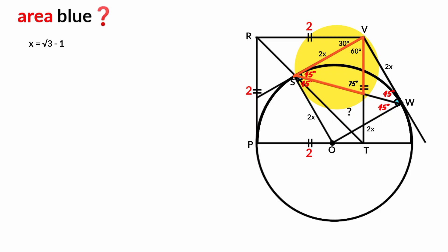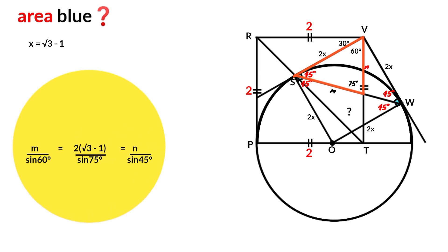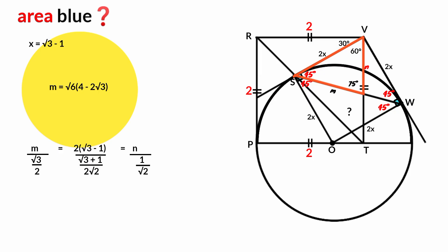On this triangle we can use the sine rule. Assume the lengths of two sides to be M and N. Applying the sine rule: M / sin 60° = 2x / sin 75° = N / sin 45°. With x = root 3 minus 1, sin 60° = root 3 over 2, sin 75° = (root 3 + 1) / (2 root 2), and sin 45° = 1 / root 2. Simplifying: M = root 6 times (4 minus 2 root 2), and N = 2 times (4 minus 2 root 3).